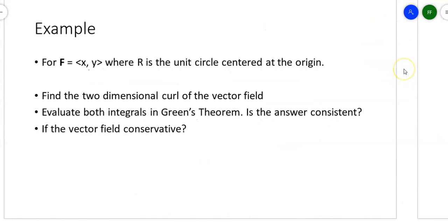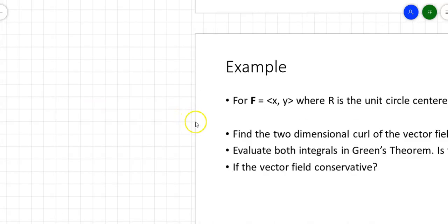Let's take a look at a somewhat simple example, evaluating this vector field XY where R is the unit circle centered at the origin. We can take the derivative of the first component with respect to Y, and the derivative of the second component with respect to X. For this, we get 0 and 0. That means that the two-dimensional curl is 0, and it's irrotational.